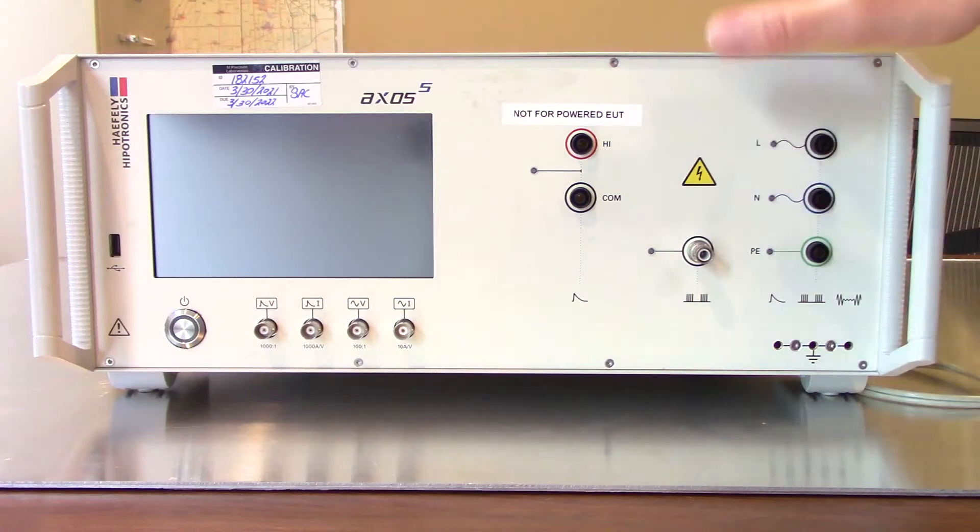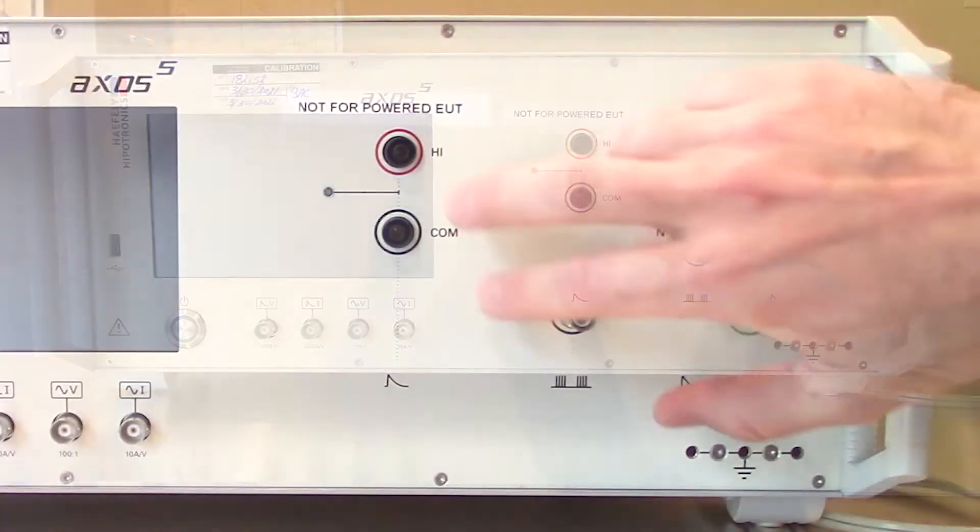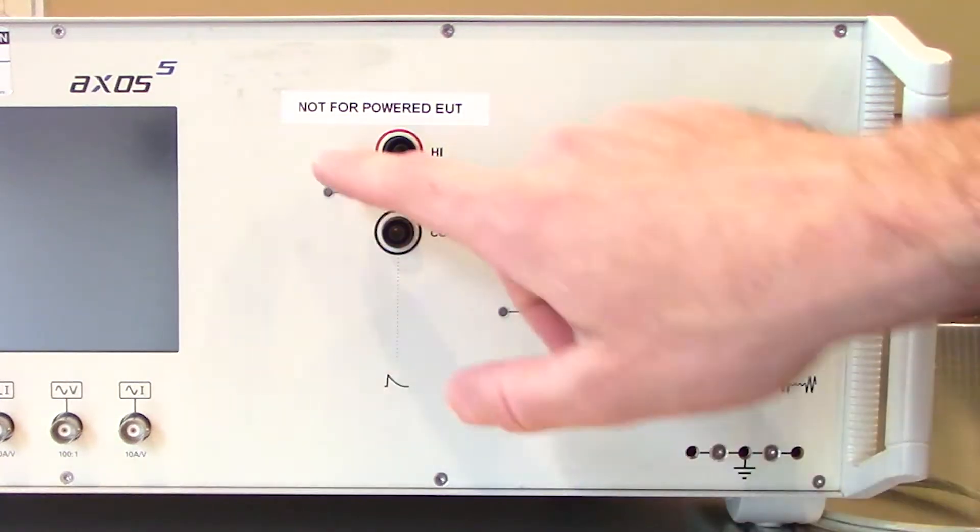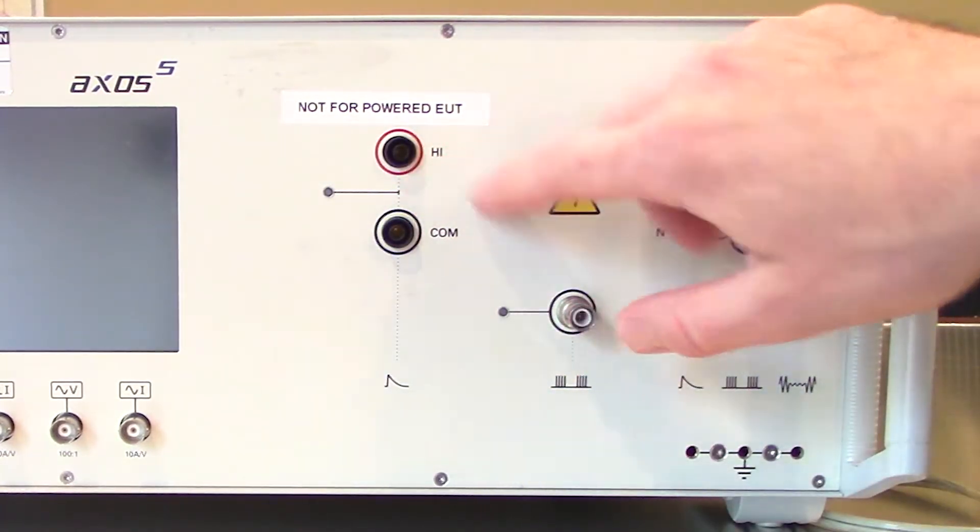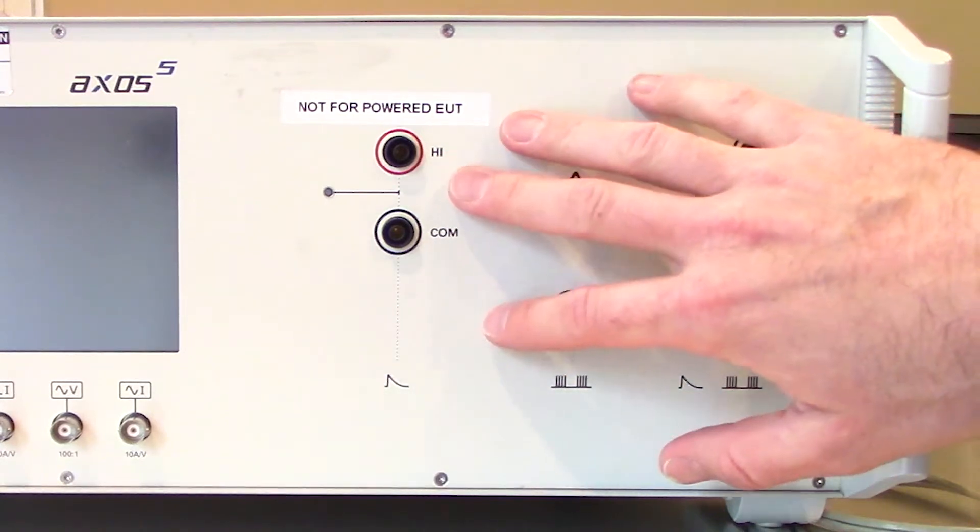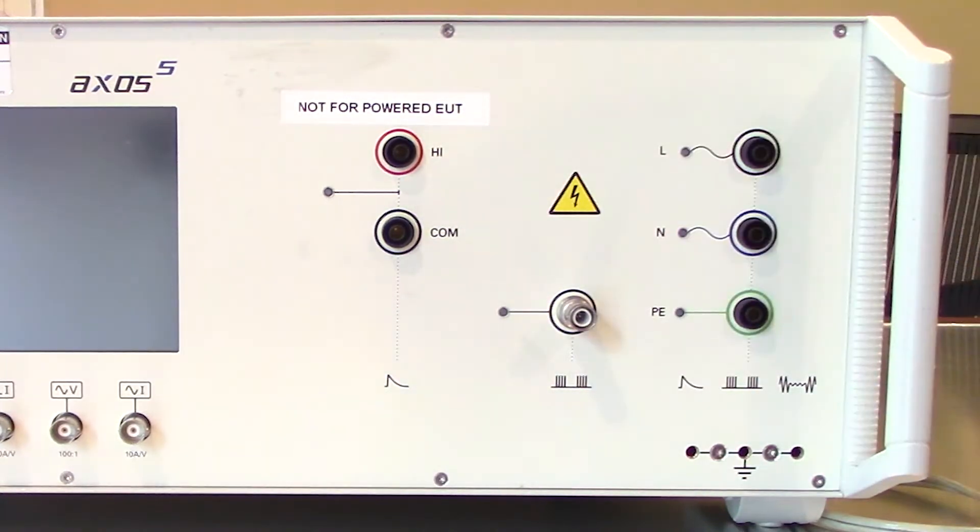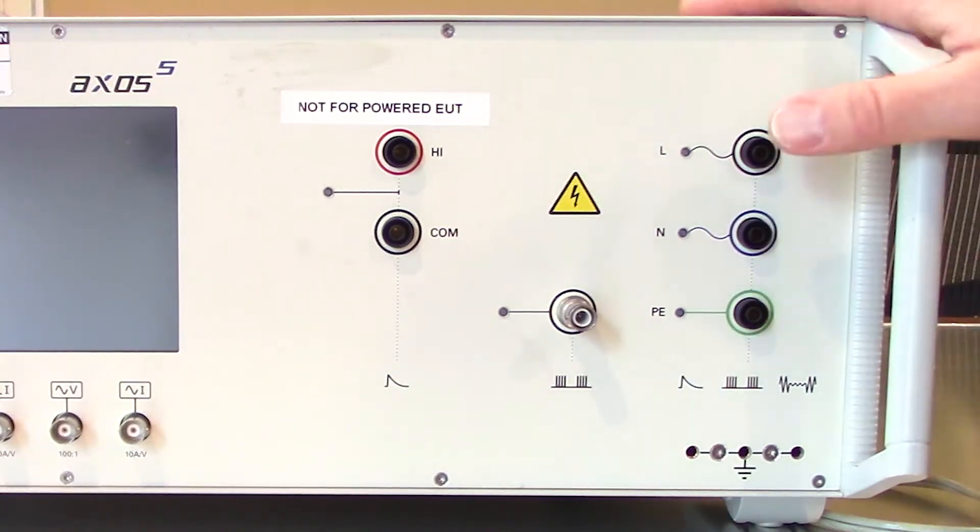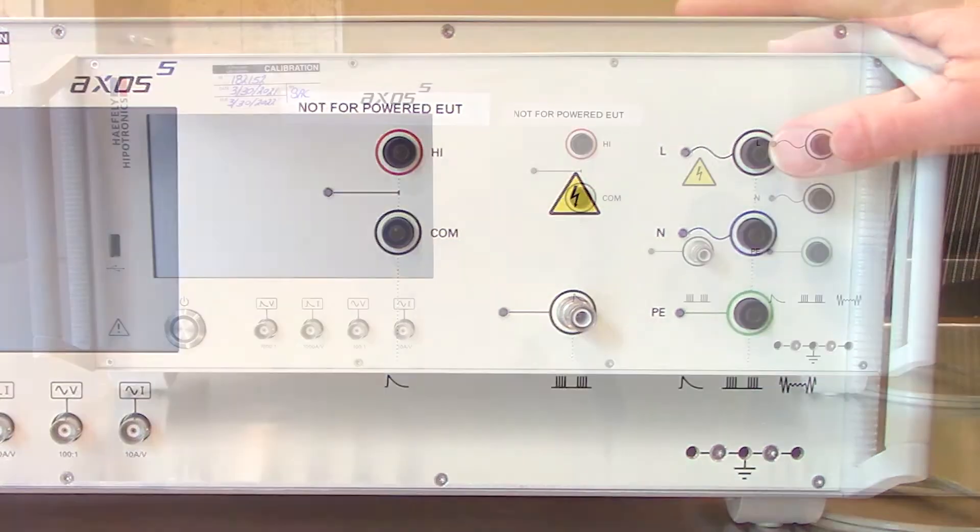Taking the front side of your Haefeli Axos 5, you'll see your direct out for combination wave surges and an icon here as well as a note saying not for powered equipment under test. So just be sure, like we're going to do in this video today, if you're doing power on testing you are going through the connections here on the right, which is going through your coupling decoupling network.